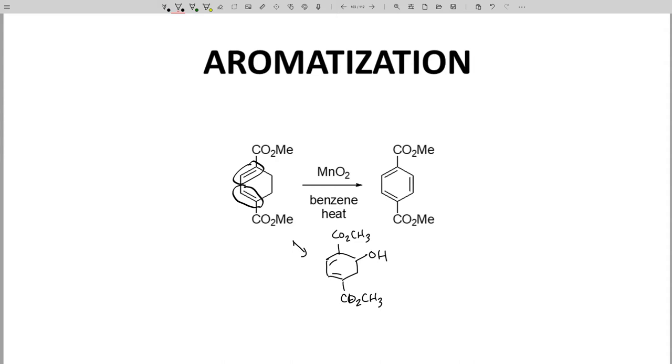This reagent is known for oxidizing carbons next to a double bond, the allylic position. Once an alcohol is formed, if the molecule loses water through an elimination, we form the aromatic product. Most aromatizations work in exactly this manner. A ring is likely one pi bond away from being aromatic, and then some kind of elimination occurs to form the pi bond and generate the aromatic ring.